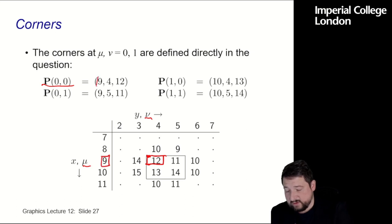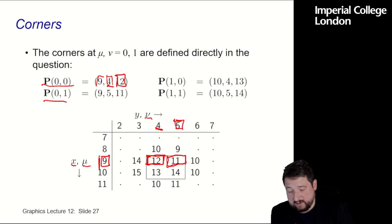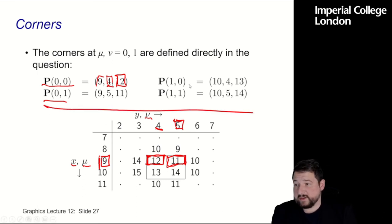Y, or ν is 4, this one, and the z coordinate is 12. Okay, so this is our grid, and by chance, it's parallel with μ and ν, and does to make things easier. Let's do another one, P(0,1) is this one, so this is P(0,1), that one, so it's at 9, 5, and 11. Okay, so now these are our four points for this Coons patch, and our task is to work out how this Coons patch looks like.